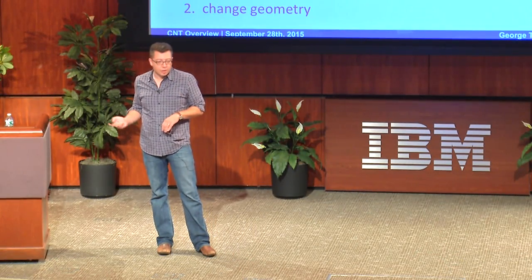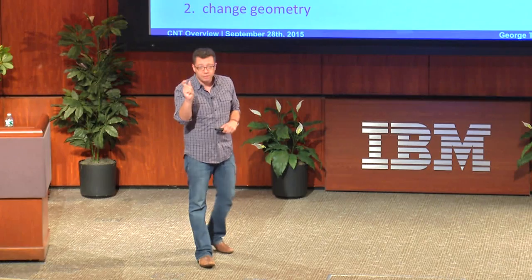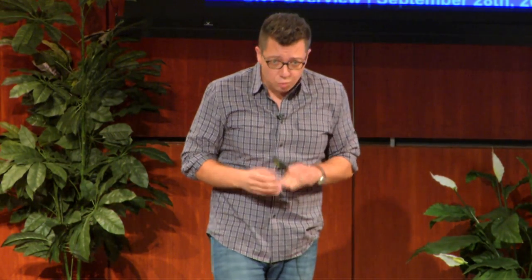We've run into a problem over the last 10 years or so. One key problem is oxide thickness: as we shrink the device we have to shrink the oxide, and if I can't shrink the oxide the gate loses control over the channel — it's just too far away to modulate the current. If I shrink the oxide down to about one nanometer, where we were with silicon oxide about 10 years ago, we get direct leakage current from the gate to the source. If the device leaks it consumes too much standby power and is no longer useful. And if I keep it far away so it doesn't leak, I can no longer control the channel — that introduces variability, high off states, and makes the transistor unusable.